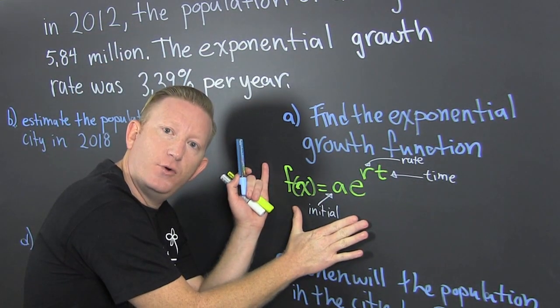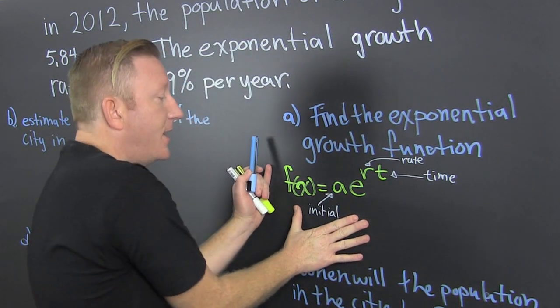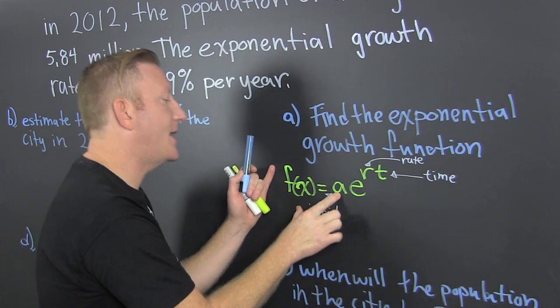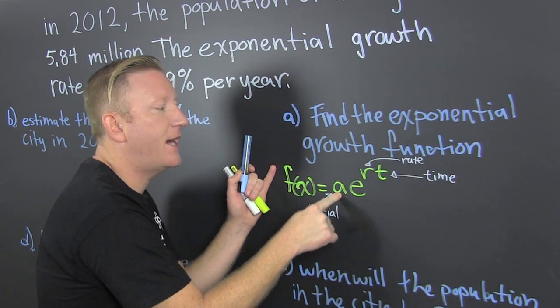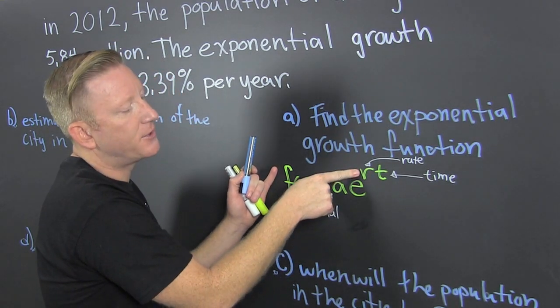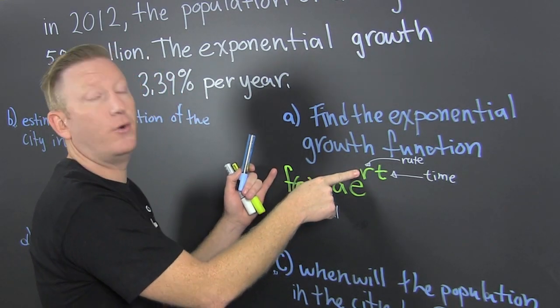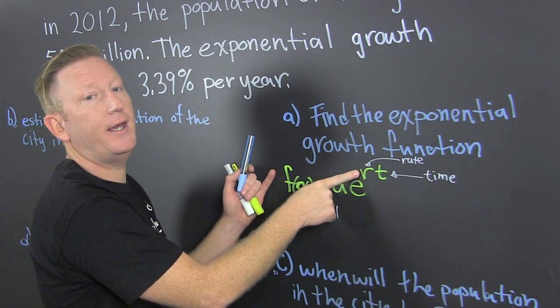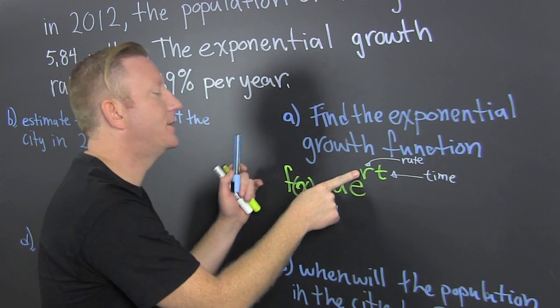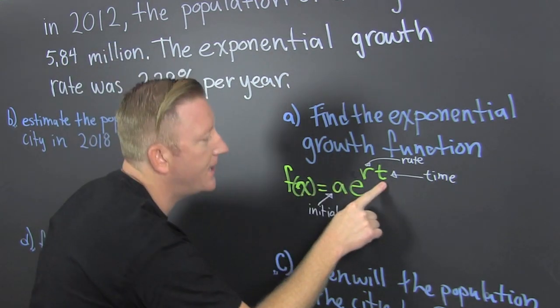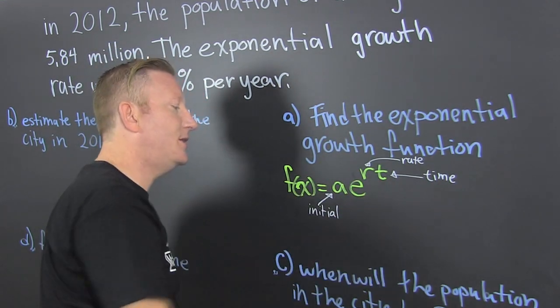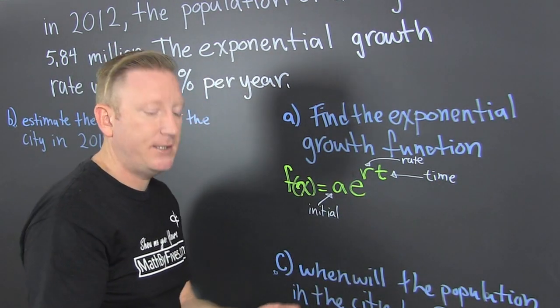It's in this form. That's the initial value. That's the growth rate or decay — high decay. And that's the time t, usually in years.